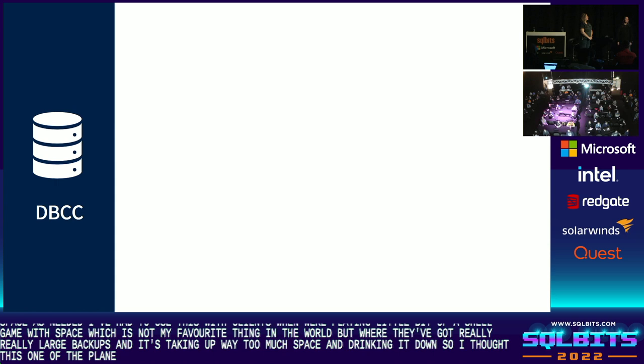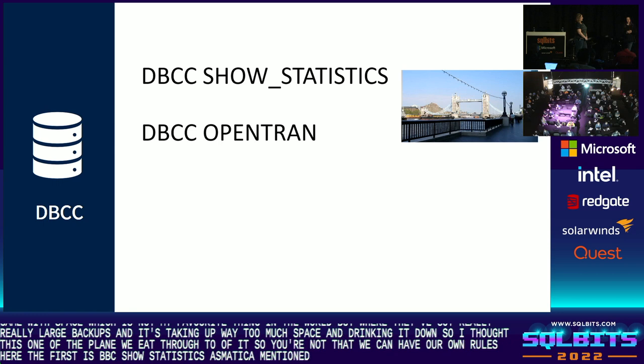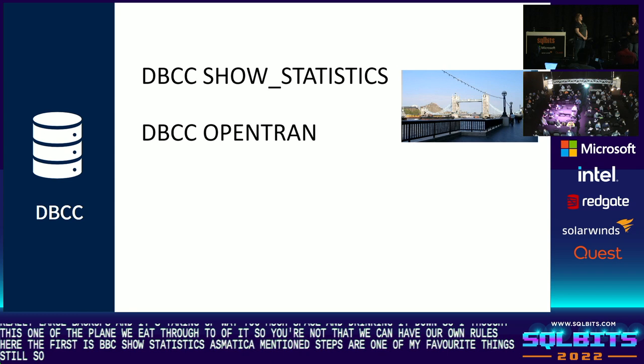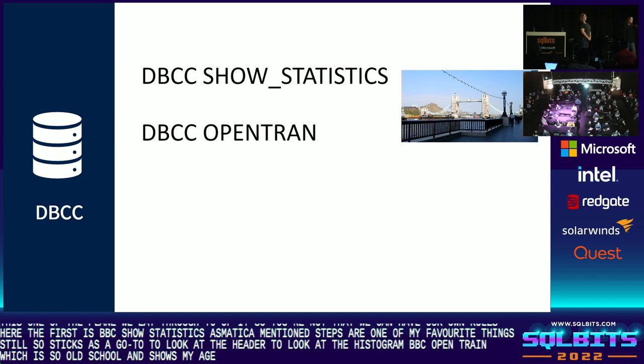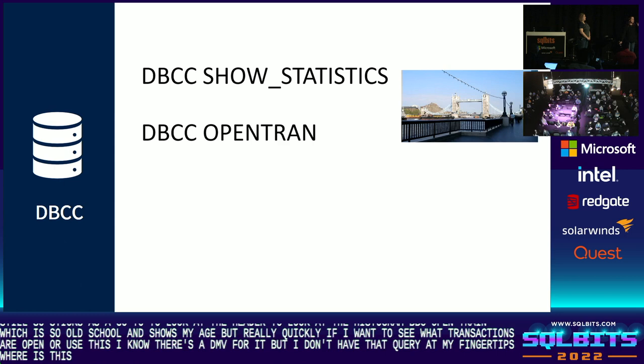Our next topic is DBCC, and we each threw two of these, so you'll notice we kind of broke our own rules. The first is DBCC SHOWSTATISTICS. Stats are one of my favorite things. There are some DMVs that give me the same information, but I still tend to use SHOWSTATISTICS as a go-to to look at the header and look at the histogram. And then DBCC OPENTRAN — old school, but really quickly, if I want to see what transactions are open, I'll use this.